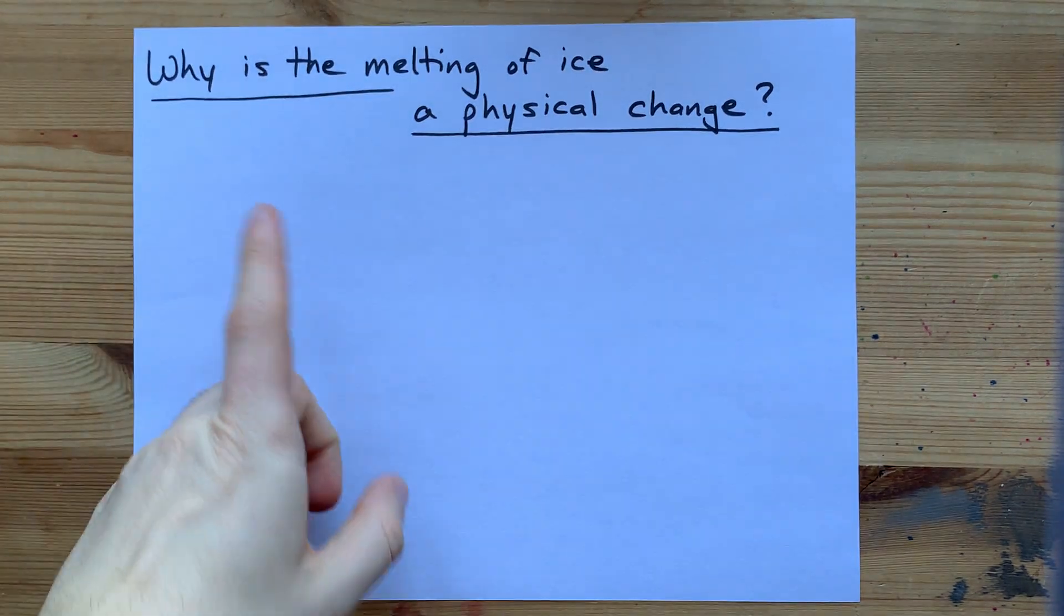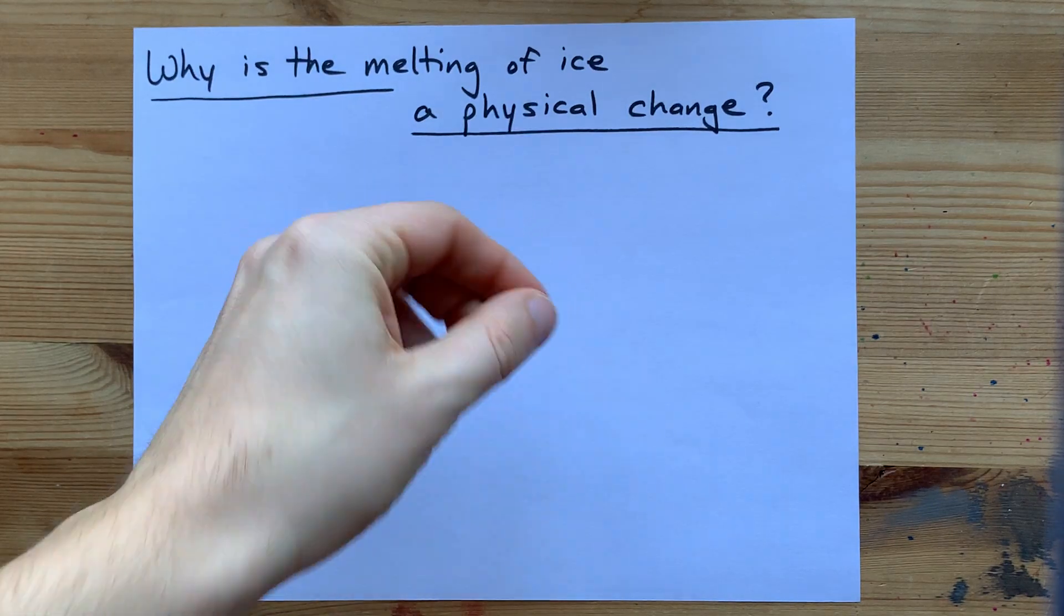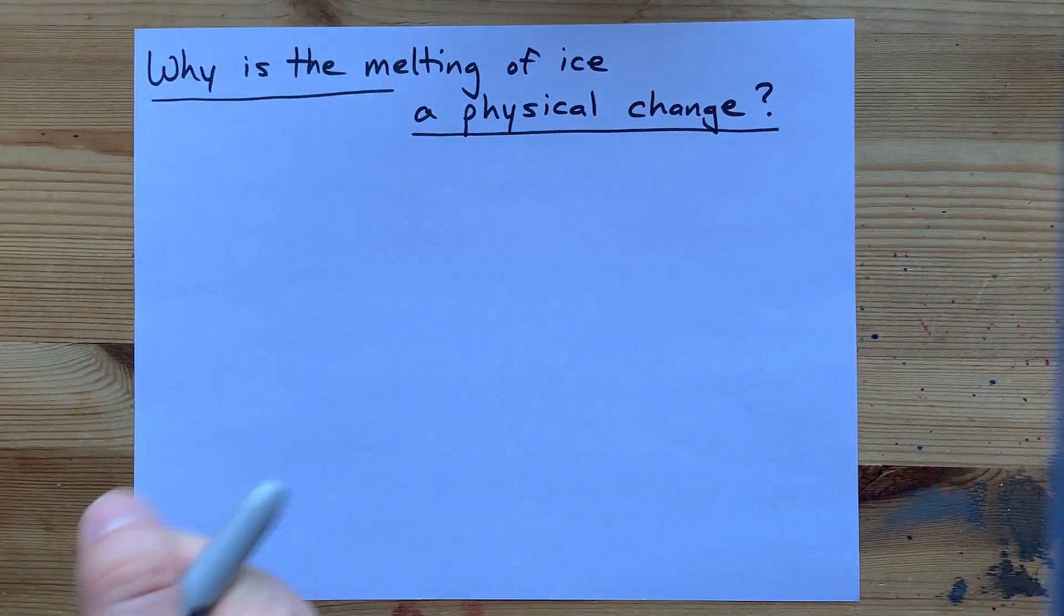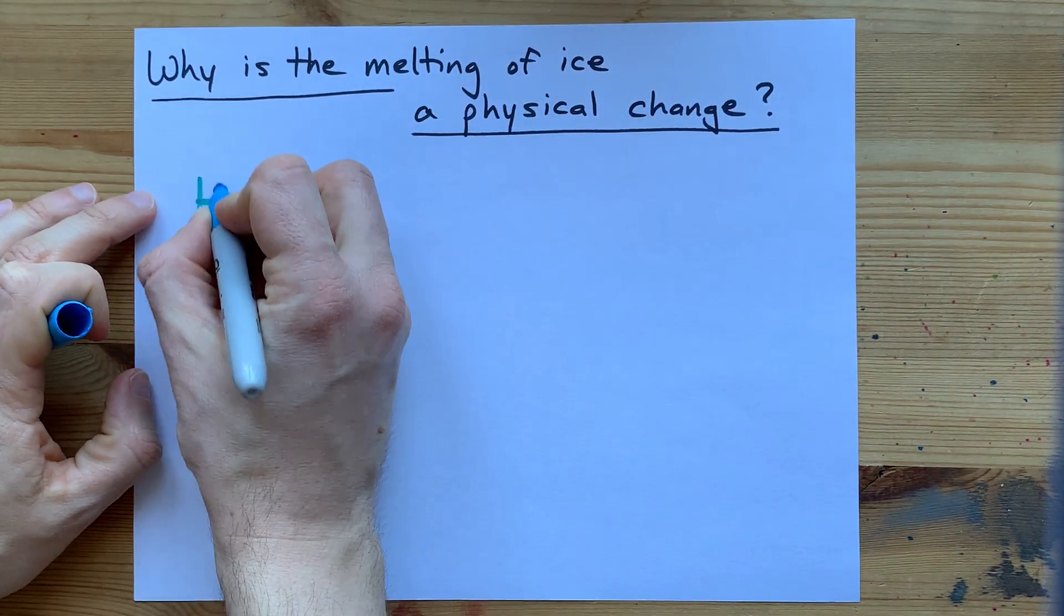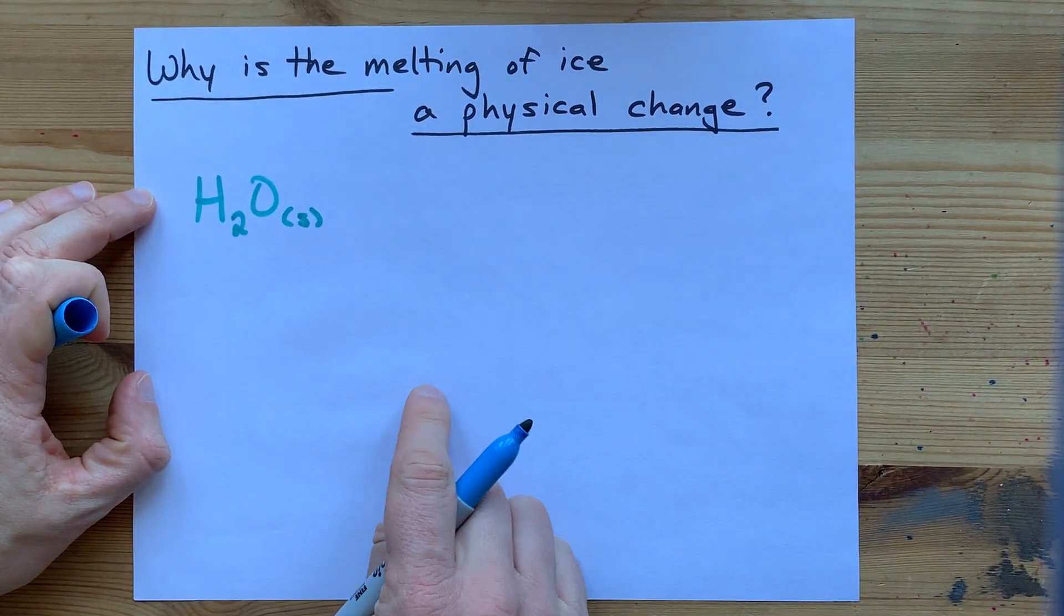Several kids have asked me why the melting of ice is a physical change and not a chemical one. The official answer is that ice is water, but in its solid state.